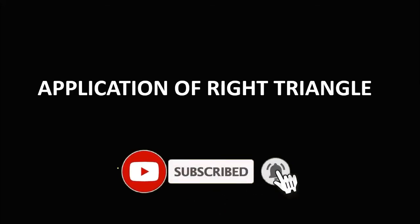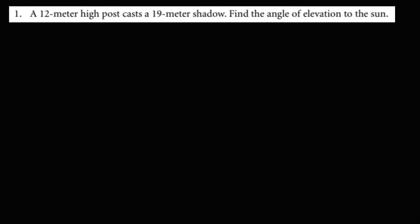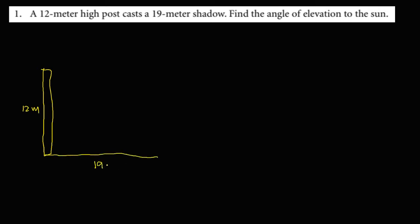Welcome to MathStoria. Let's have this problem: the application of a right triangle. We have this given — a 12-meter high pole causes a 19-meter shadow. So if this is the 12-meter high pole, this one is 12 meters, and the shadow is 19 meters. Find the angle of elevation to the sun.